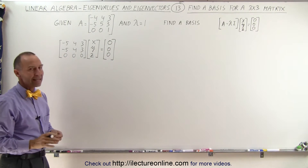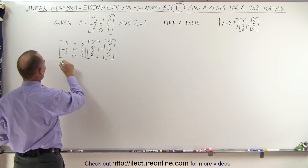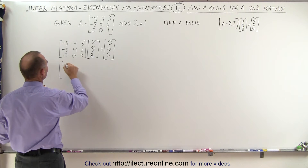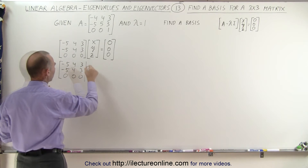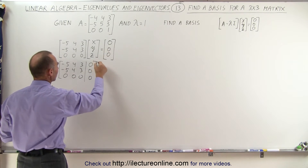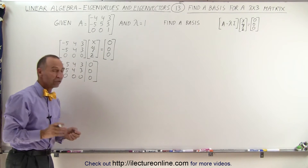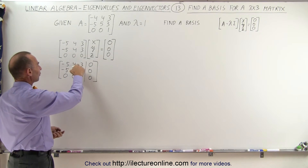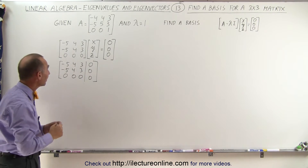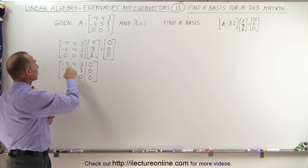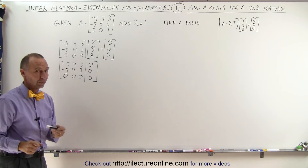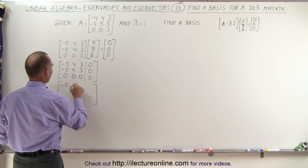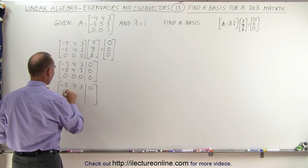We can now write this in the augmented matrix format to solve this, because after all this is a set of linear equations. We get minus 5, 4, 3, 0, and the augmented zeros. We already have one row that's completely zeros, and notice that the first row and second row are identical, which means we can eliminate the entire second row by multiplying the first row by negative 1 and adding it to the second row, which means this then becomes the following matrix: minus 5, 4, 3, and 0, and this all becomes zeros.